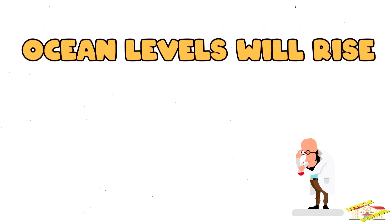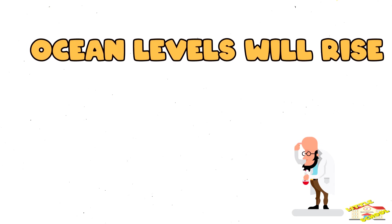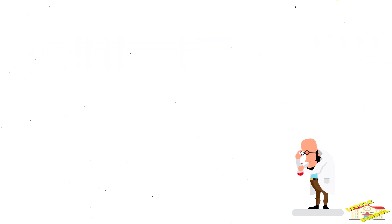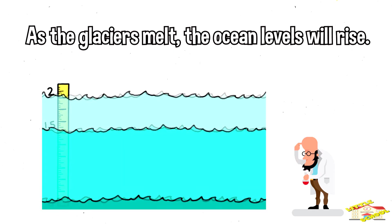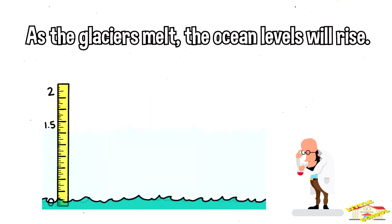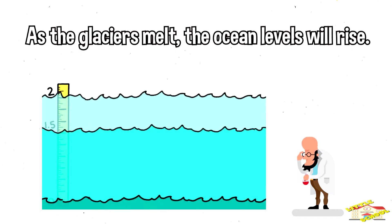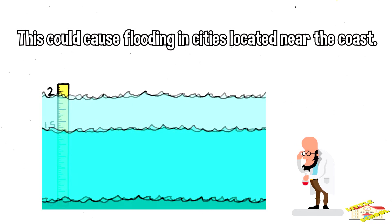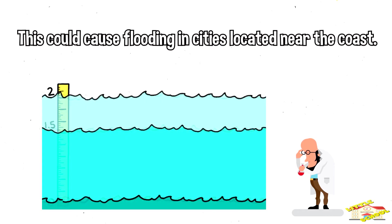Ocean levels will rise. As the glaciers melt, the ocean levels will rise. This could cause flooding in cities located near the coast.